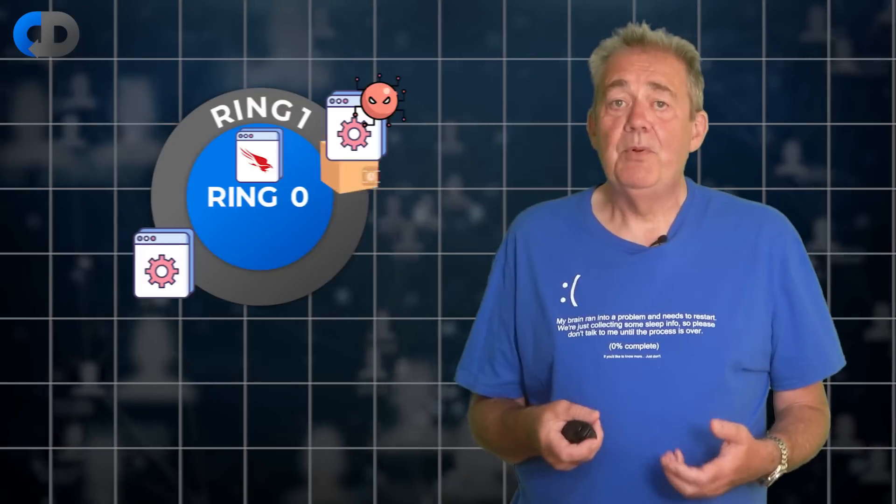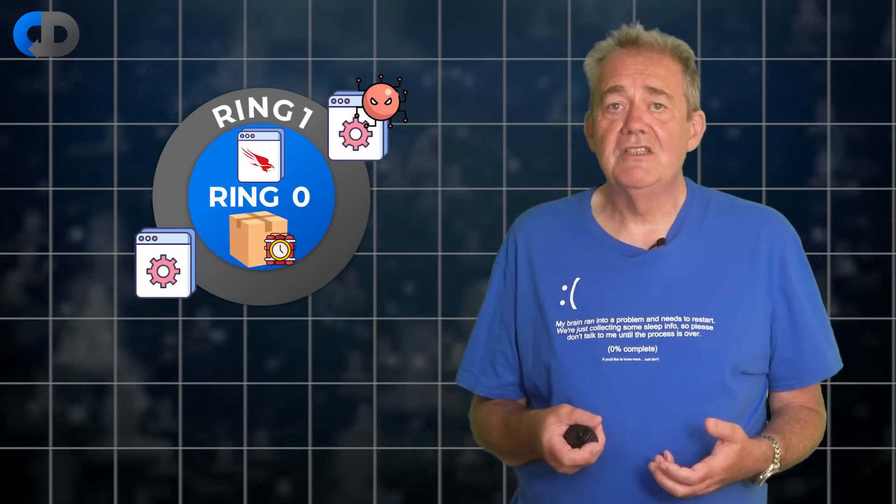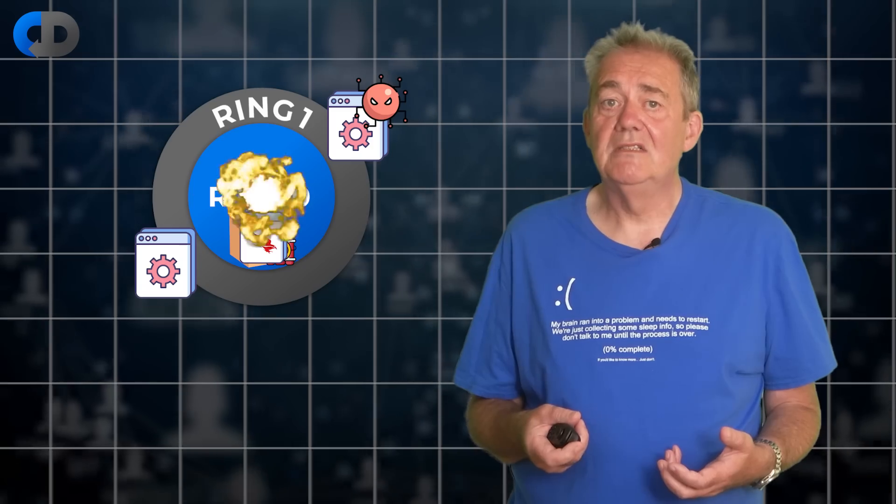Clearly, given this very public failure, CrowdStrike's testing wasn't good enough. And let's be clear about that too, because this bug was not some obscure corner case. 8.5 million failed systems don't obviously suggest that this was an unusual and so hard to detect failure.